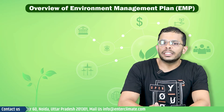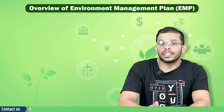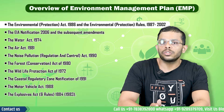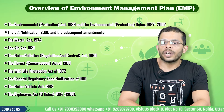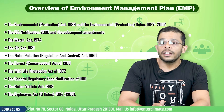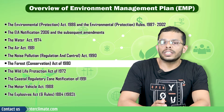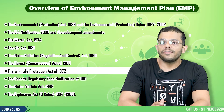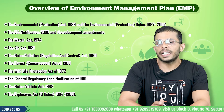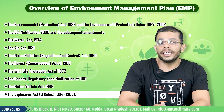Necessary acts and rules must be considered when creating an Environment Management Plan. Some of the major acts include the Environment Protection Act of 1986, the Environmental Protection Rules of 2002, the EIA Notification 2006 and subsequent amendments, the Water Act of 1974, the Air Act of 1981, the Noise Pollution and Regulation Control Act of 1990, the Forest Conservation Act of 1980, the Wildlife Protection Act of 1972, the Coastal Regulatory Zone Notification of 1991, the Motor Vehicles Act of 1988, and the Explosives Act of 1884.